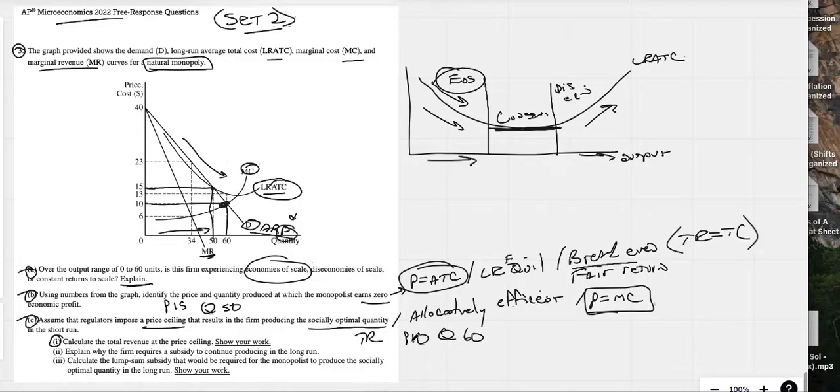Explain why the firm requires a subsidy to continue to produce in the long run. Well, right now price is less than the ATC. This firm is making losses and if they keep making losses in the long run they'll go broke.